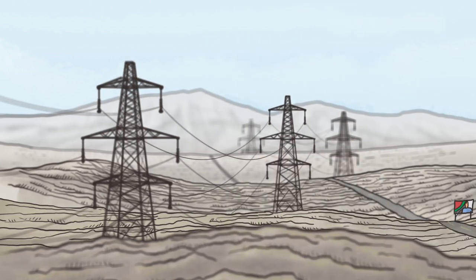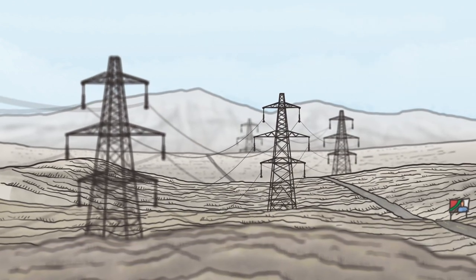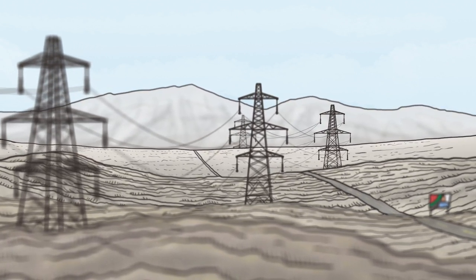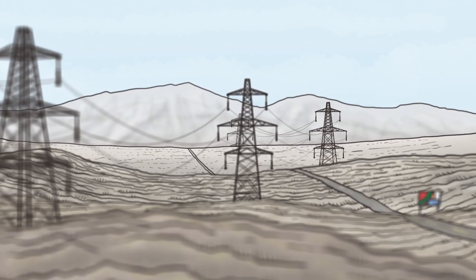Once electricity is generated in the power plant, it is distributed all over Greece through cables, which are found on the transmission line towers. It is through these that it arrives in our houses.